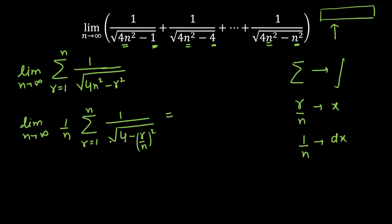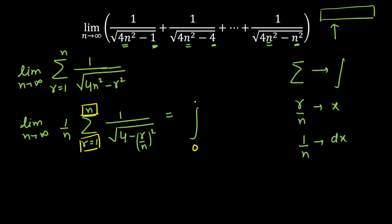Now I am going to convert this summation form into integration form. The lower limit: dividing r = 1 by n and taking the limit as n tends to infinity gives 0. The upper limit divided by n gives 1. So 1/n converts to dx and r/n converts to x. We get the integral from 0 to 1 of 1 upon root over (4 minus x²) dx.